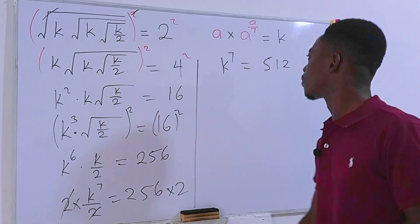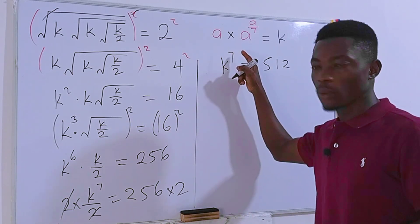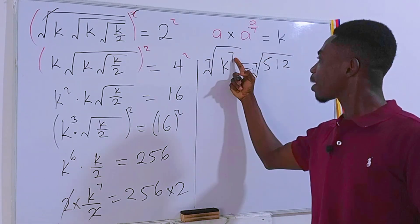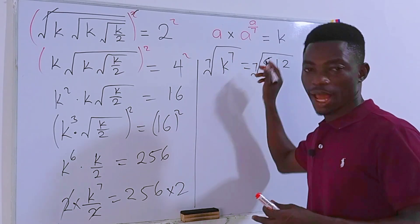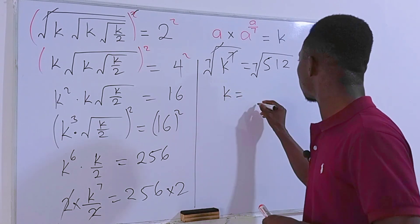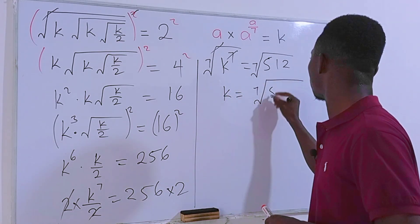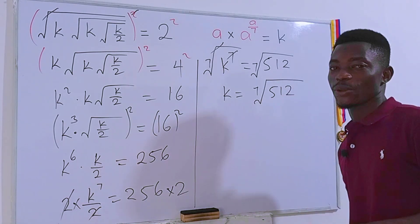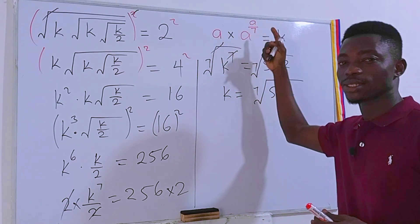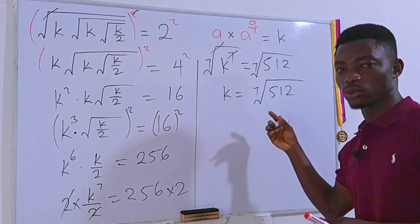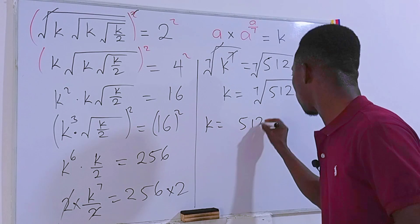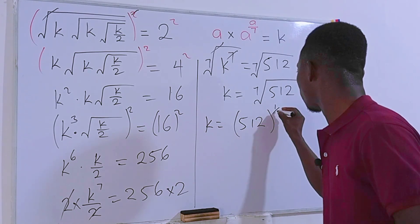We are looking for k, and we have k to the seventh power, so we take the seventh root on each side of the equation. Remember the power here is an odd number, so there's no need for plus or minus. This power cancels out and we have k is equal to the seventh root of 512. We've found the value of k, but k should be in the form a times a to the power a divided by 7, and this is not yet in that form.